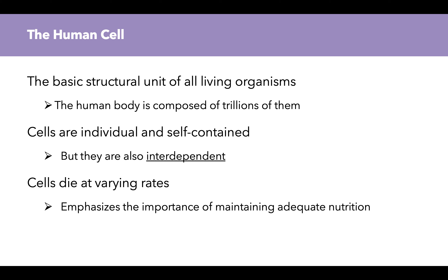We can start by looking at the human cell. The cell is the basic structural unit of all living organisms, and the human body is composed of trillions of cells. Cells are individual and self-contained, but they are also interdependent, meaning they depend on one another in order to survive. Cells die at varying rates, and this emphasizes the importance of maintaining adequate nutrition. Take, for example, intestinal cells, which die off every couple of days and need a constant supply of nutrition in order to regenerate properly.